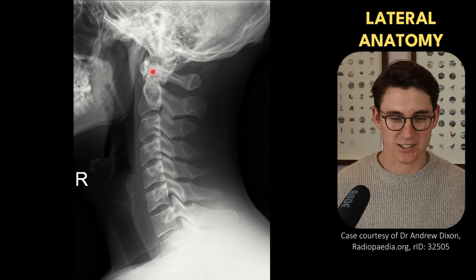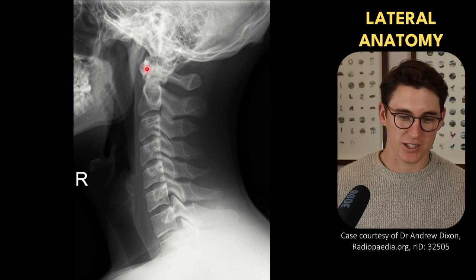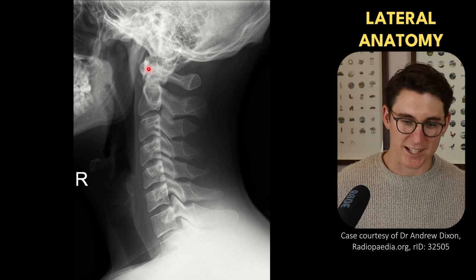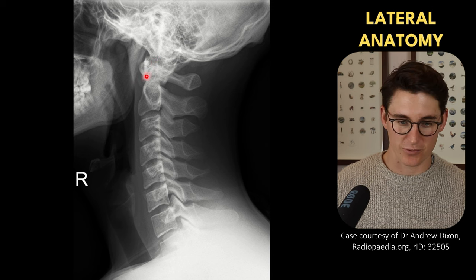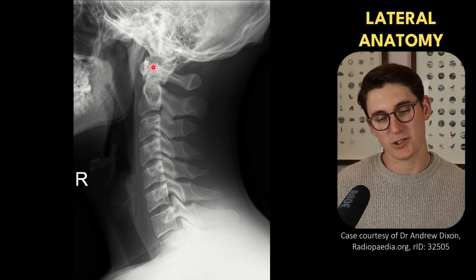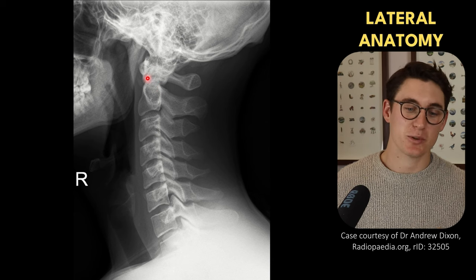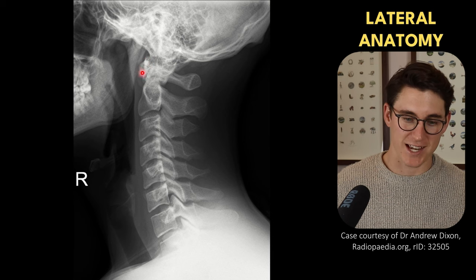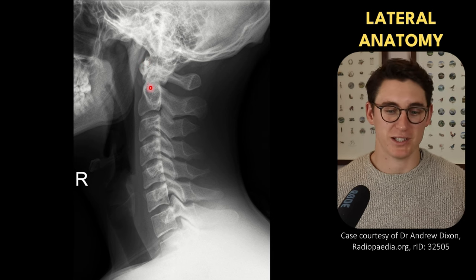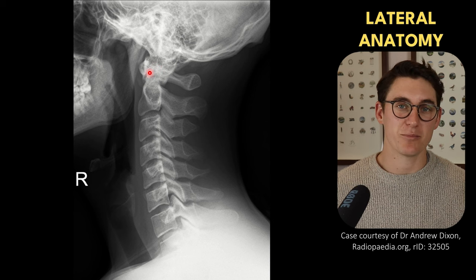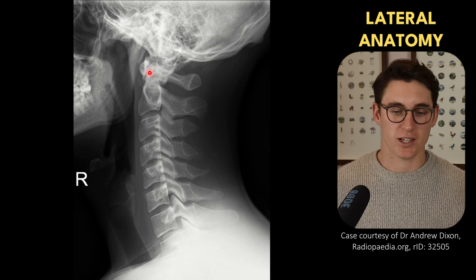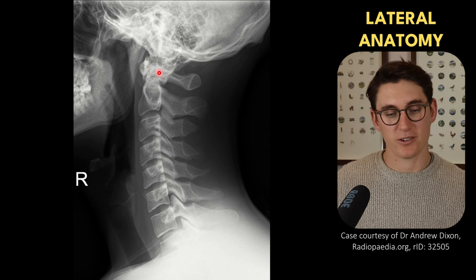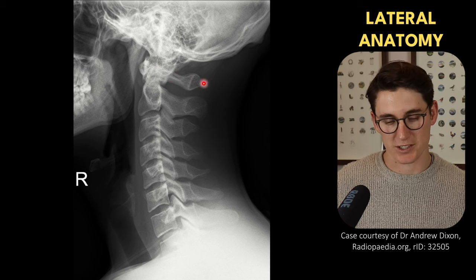Let's look at the anatomy of the cervical spine on the lateral view, starting at C1, our atlas. You can see the anterior body forming almost an oval shape with a flat posterior surface, which articulates with the anterior surface of our dens. Following the outline of the dens, it protrudes into the C1 vertebra. The space between the anterior surface of the odontoid and the posterior articular surface of the anterior body of C1 should be less than 3 millimeters in adults and less than 5 millimeters in children. We can also see the posterior body of C1 and a small spinous process.